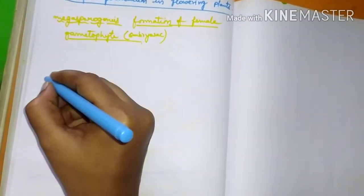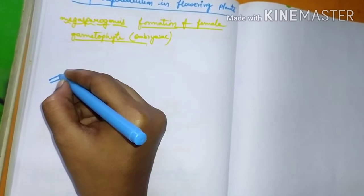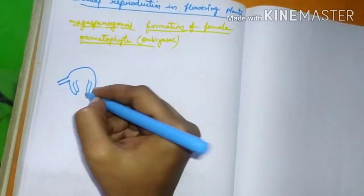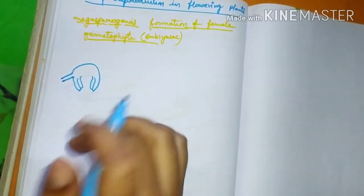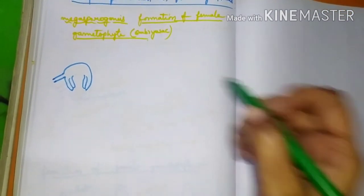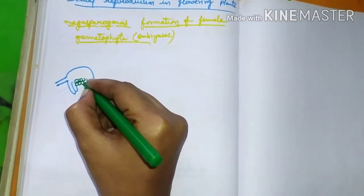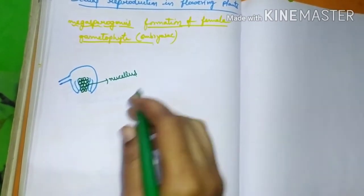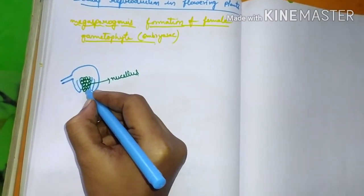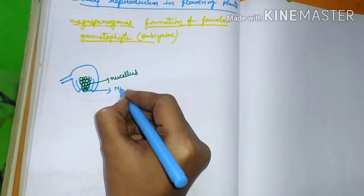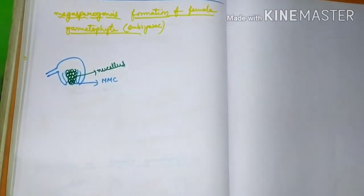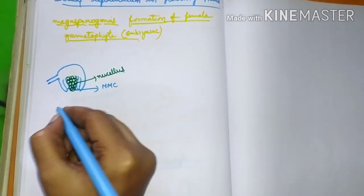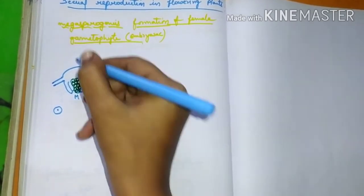For this we will draw the structure of an anatropous ovule. This is the stalk or funiculus, and this is the body of the ovule. The body of the ovule consists of a mass of cells which is called the nucellus. From this nucellus, from this mass of cells, one cell is differentiated and acts as the megaspore mother cell. In microsporogenesis we also saw microspore mother cells, so don't be confused — this is the megaspore mother cell.